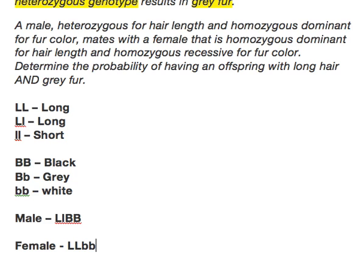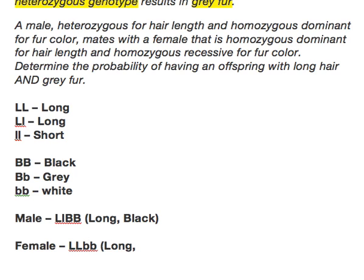So we've read the word problem, picked out our key parts, and determined the genotypes of the parents. Now let's determine their phenotypes. If the male is big L little L, it is going to have long fur, and if it is big B big B, it is going to have black fur. If the female is big L big L, it is going to have long fur, and if it is little b little b, it is going to have white fur.